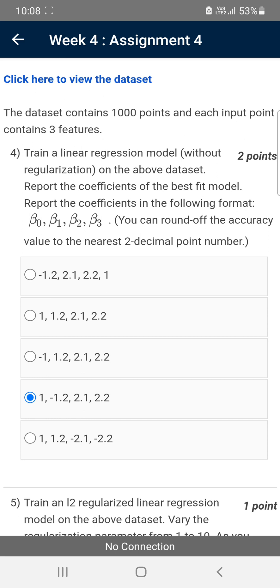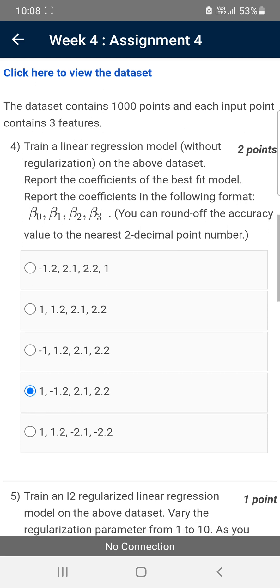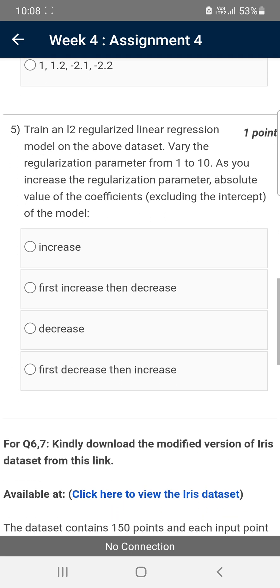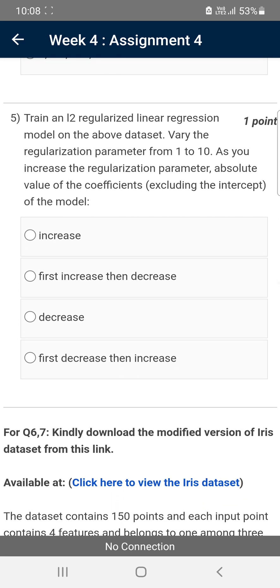Moving on to the fifth one. Train an L2 regularized linear regression model on the above dataset. Vary the regularization parameter from 1 to 10. They are asking what will happen to the absolute value of the coefficients. For the fifth question, the probable answer is decrease, that is the third option.